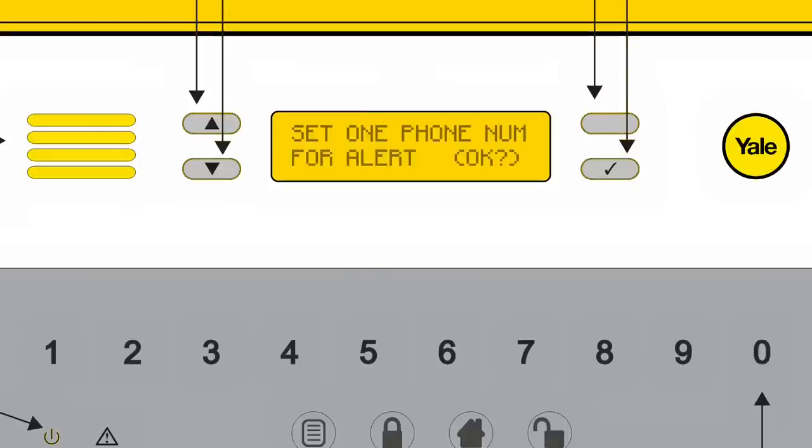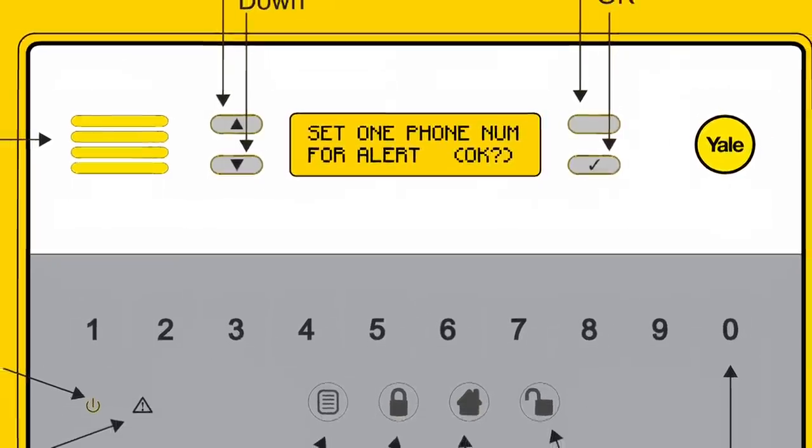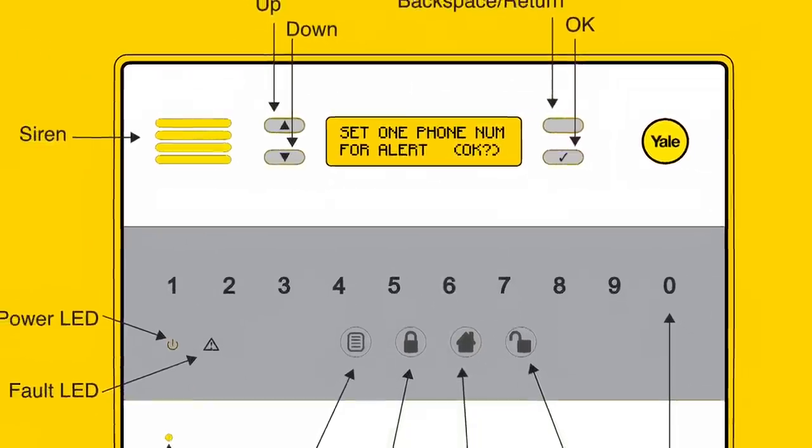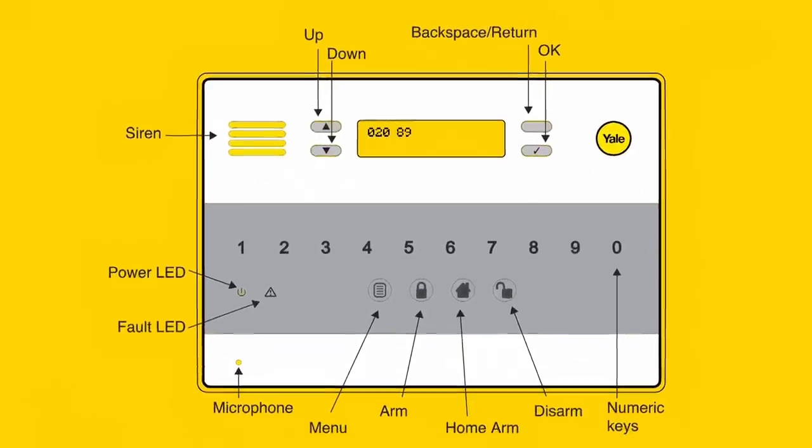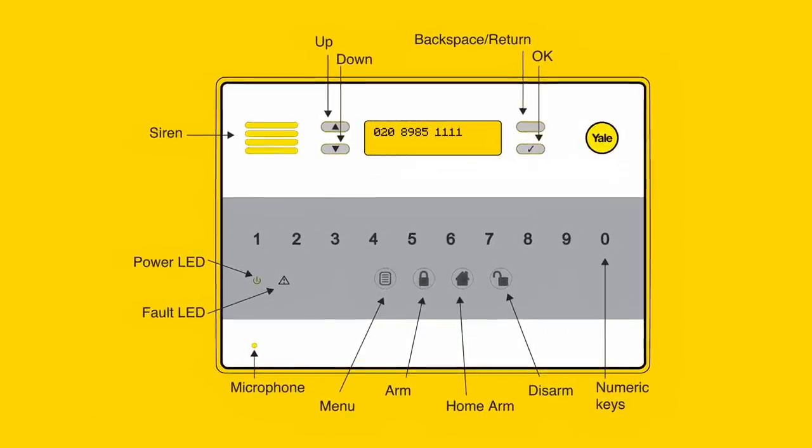You will now be prompted to set the first telephone number required for an alert in the event of an alarm. Using the touch screen panel, type in the required telephone number and press the tick button to continue. If you do not want to set an alarm through the telephone, press the return button to skip this step.